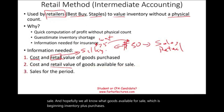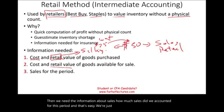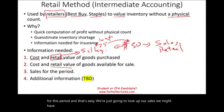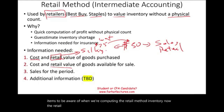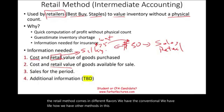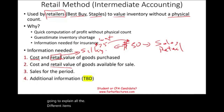Then we need the information about sales — how much sales we accounted for this period. We might have additional information to discuss about the computation, so there are more items to be aware of when computing the retail method inventory. The retail method comes in different flavors: we have the conventional, we have LIFO, and other methods. In this session I'm going to be covering the conventional method. If you understand the conventional method and all the different pieces, you'll be able to understand the other methods.